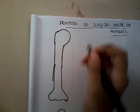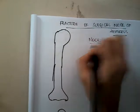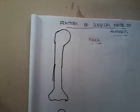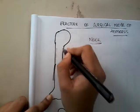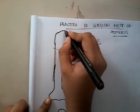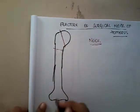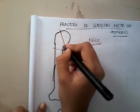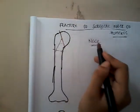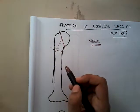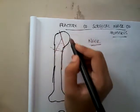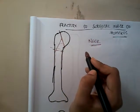There is a person who is called Nair, who has classified the fracture of surgical neck of humerus based on 4 different parts which can be involved in this fracture. Nair identified 4 parts where the fracture of neck of humerus can occur.